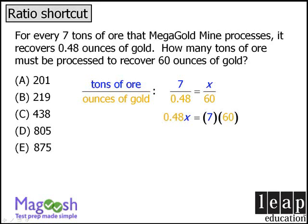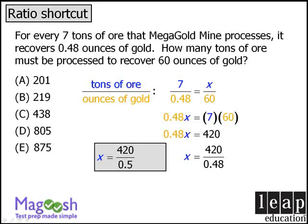And now we can simplify the right hand side to be 420. At this point we'll divide both sides by 0.48. We can save considerable time by recognizing that 420 divided by 0.5 is equal to 840, so we know that our answer is somewhere around 840 — it could be answer choice D or E.